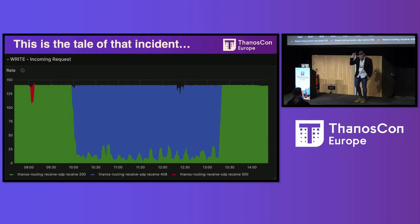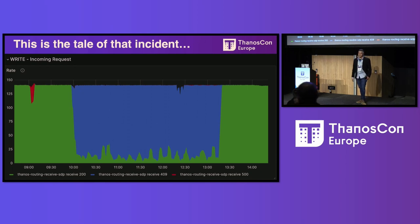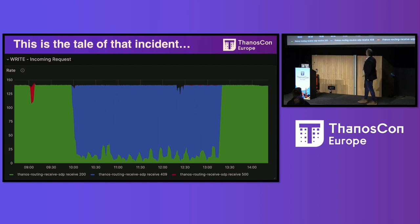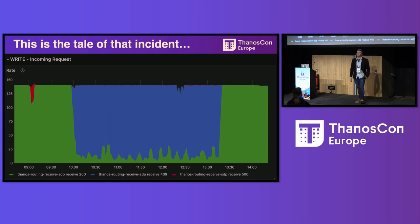So this is the story of that incident. This graph is showing writes to Thanos. The green is good, the blue is eh, and the red is bad. There's not much red except up here — we'll talk about what that is. There's a lot of blue — we'll talk about what that is. And then the green comes back, and we'll talk about why or why not that happened.